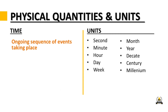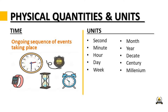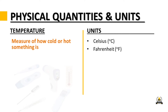Another physical quantity we measure is time — the ongoing sequence of events. You can use a clock; back in the day they used an hourglass. The units of time are seconds, minutes, hours, days, weeks, months, years, decades, centuries, and millennium.